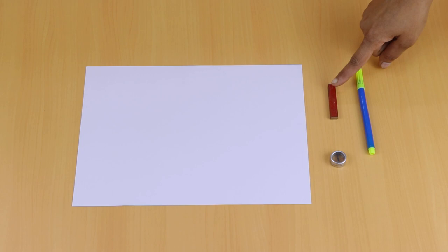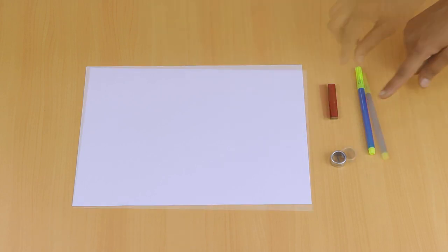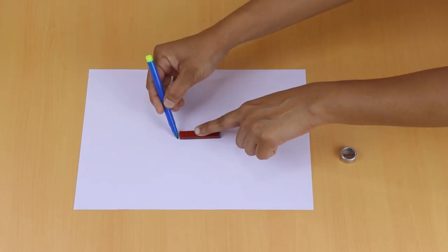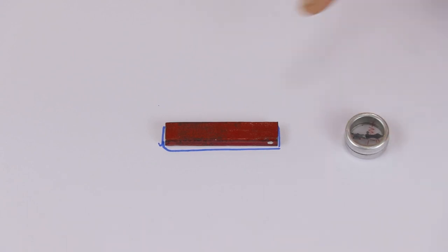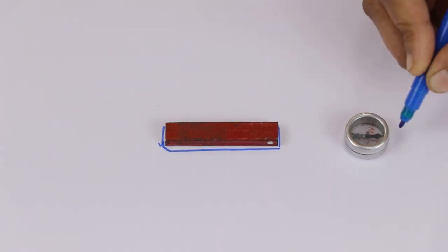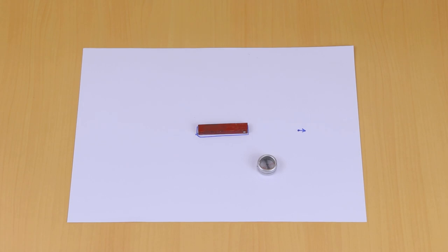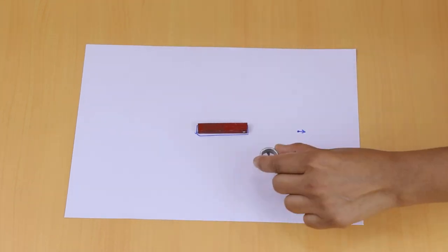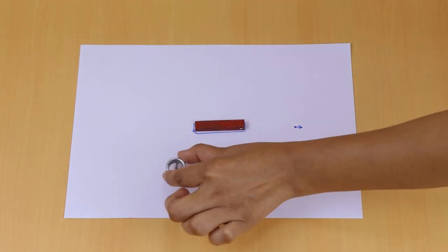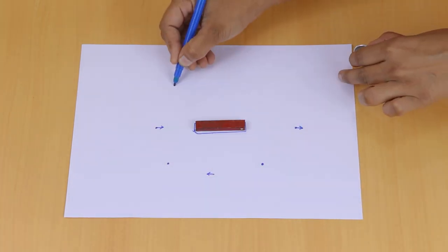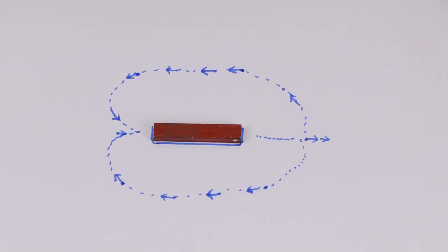You can introduce the concept of magnetic field lines and polarities using the next activity. For this we need a bar magnet, a compass, a piece of paper, and a pen. Place a bar magnet in the middle of the paper. Place the compass at one pole of the magnet. Draw a dot along the direction of the needle, then place the compass on the dot. Again draw another dot along the direction of the needle. Continue the procedure till you reach the other end of the magnet. Connect the dots and repeat the above steps.